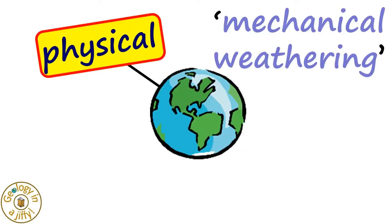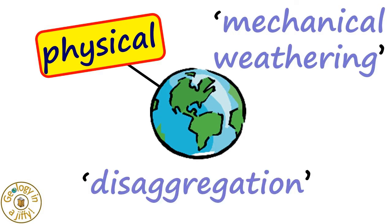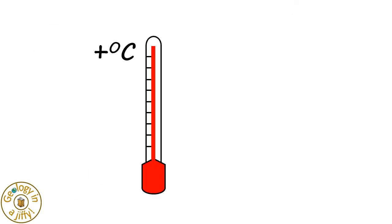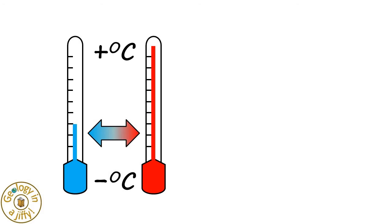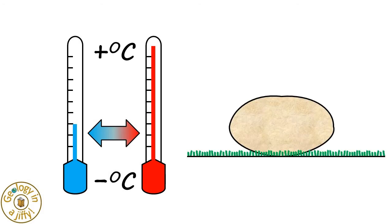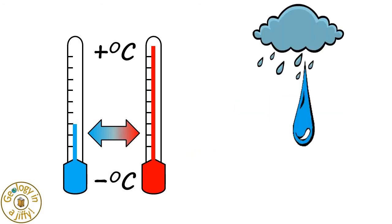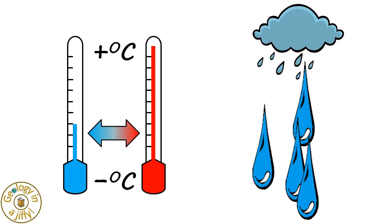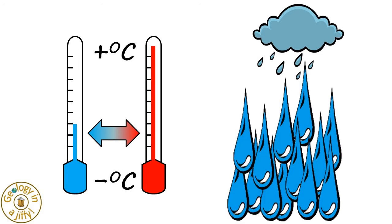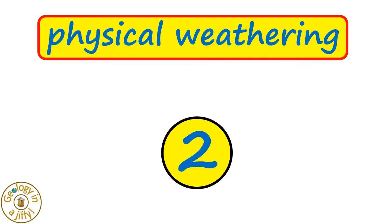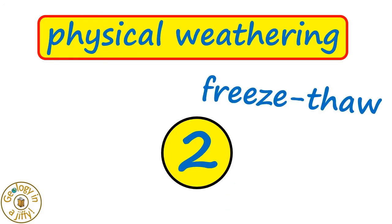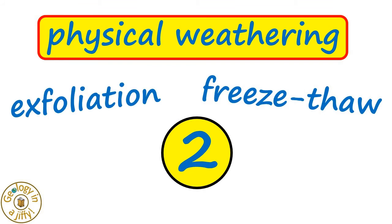Physical weathering, also called mechanical weathering or disaggregation, is caused by the effects of changing temperature on rocks, causing the rock to break apart. The process is sometimes assisted by water. There are two main types of physical weathering: freeze-thaw and exfoliation.